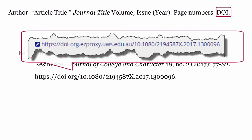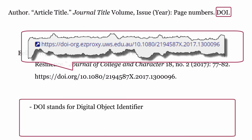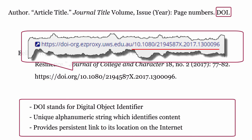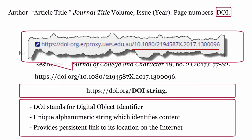DOI: add this element if it is available. DOI stands for Digital Object Identifier, which is a unique alphanumeric string that identifies content and provides a persistent link to its location on the internet. The DOI is formatted using the URL prefix https://doi.org/ followed by the DOI string. Use a full stop to end the citation.